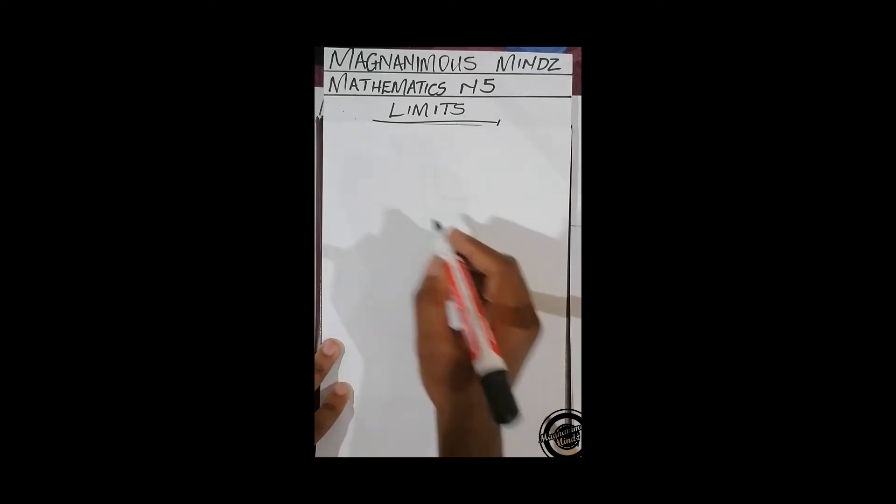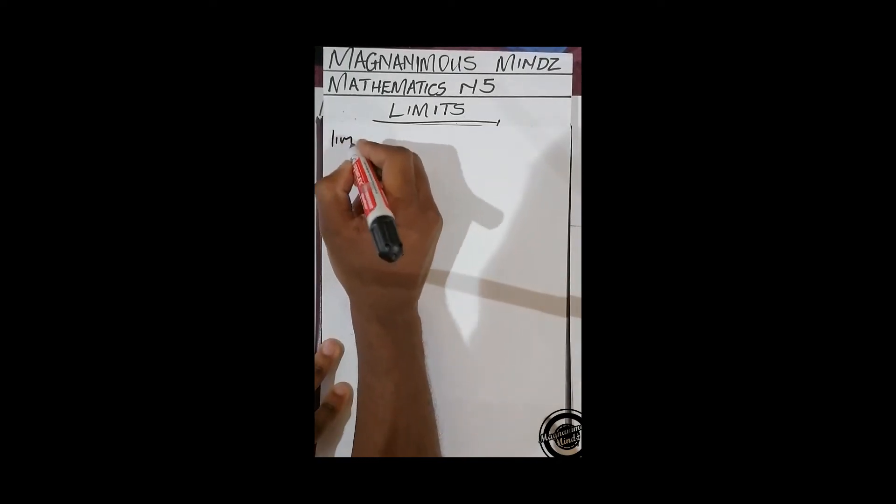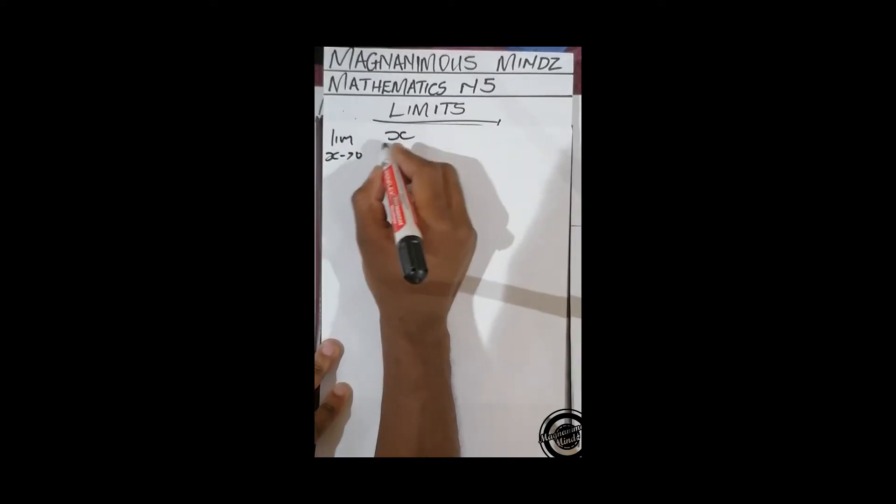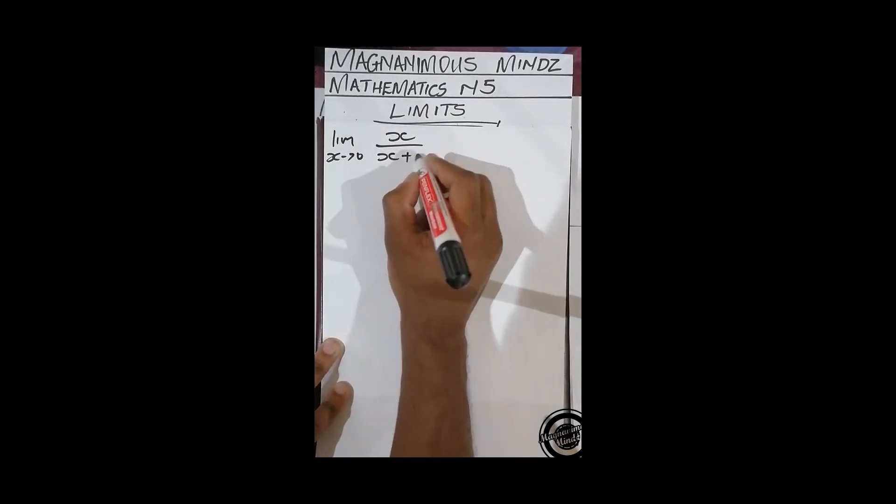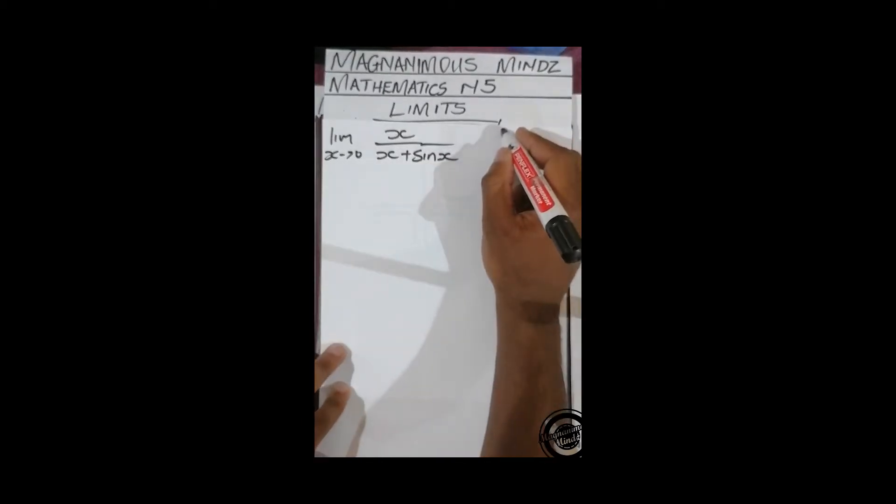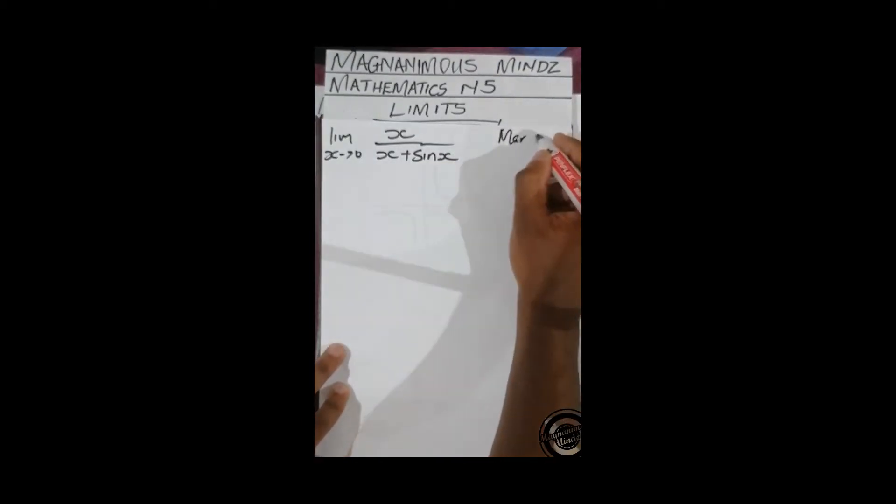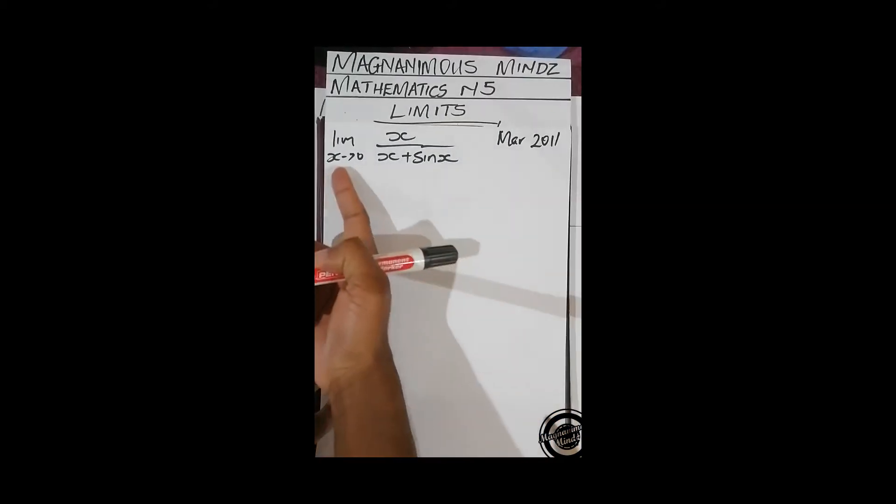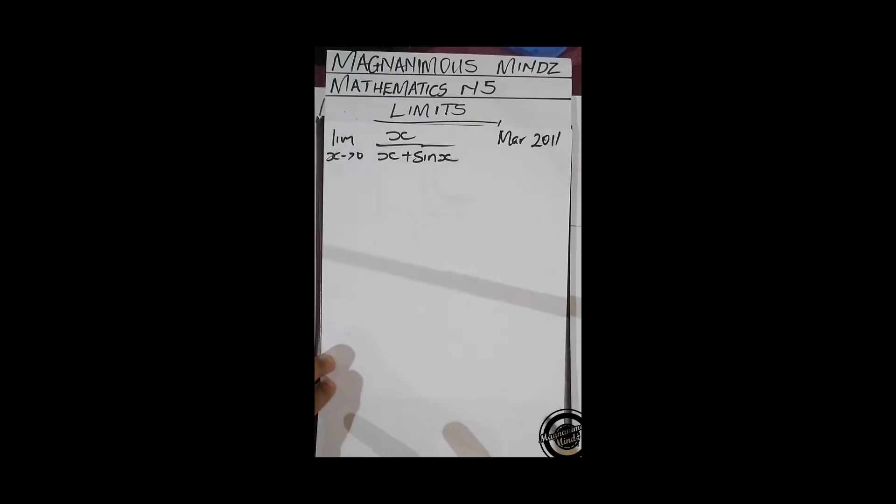The first one is lim x approaching 0, x over x plus sin x. This is from March 2011 question people. You realize that if we try to directly substitute, we're going to get 0 over 0 because x is 0, x is 0 plus sin 0 is 0.